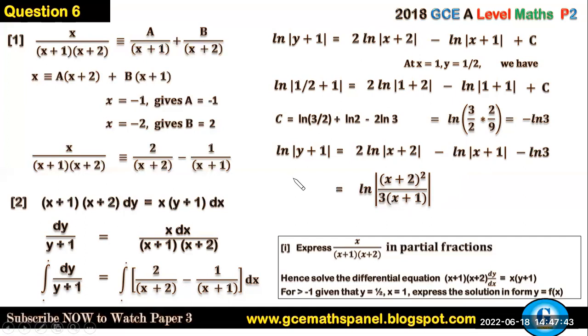From here you have the absolute value of the left-hand side equals the absolute value of the right-hand side. Therefore what you have in those brackets, that is (y+1), should be equal to (x+2)² over [3(x+1)]. And from there, if you make y the subject of the formula, we're left with y = (x+2)²/[3(x+1)] - 1.